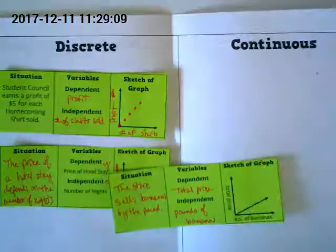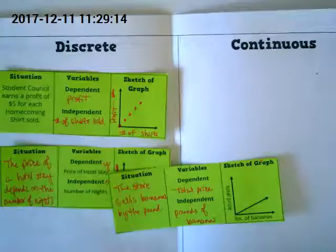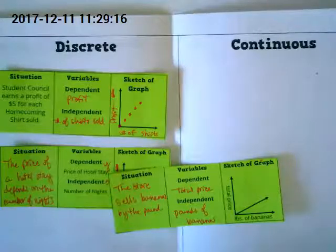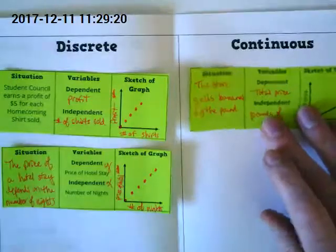This time you were given the graph. The store sells bananas by the pound, or you could have said the cost of the bananas depends on the pounds that you buy. Continuous or discrete? Continuous.